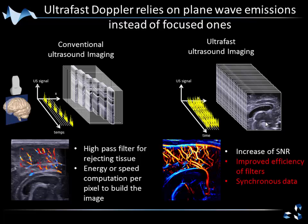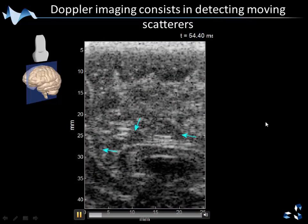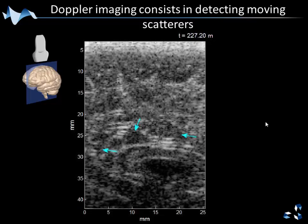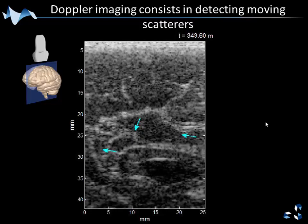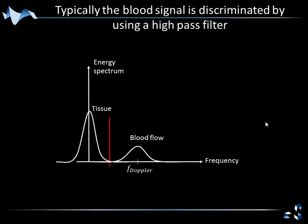It's the same vascular image in a human neonate brain, but it also implies improved efficiency of filters, and you have synchronous data. Doppler imaging consists in detecting moving scatterers. This is an ultra-fast data movie of a human brain in a neonate — you can see the speckle moving in some locations. We want to discriminate between tissue and blood flow. The classical way to do this is a high-pass filter: the tissue is centered on zero frequency and the blood flow on the Doppler frequency, and the high-pass filter cuts in between.